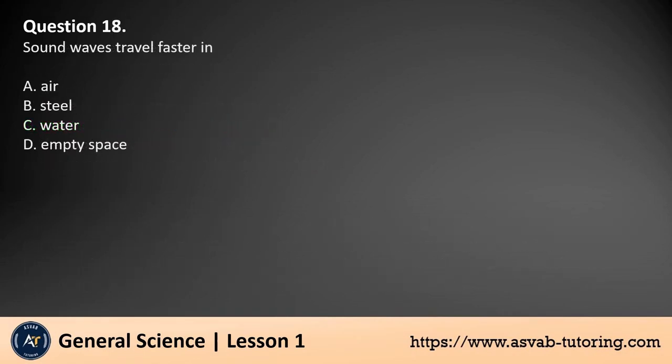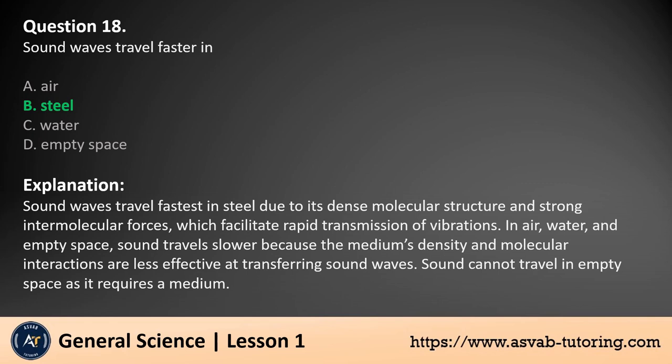Question 18. Sound waves travel faster in: a. Air. b. Steel. c. Water. d. Empty space. The answer is b. Sound waves travel fastest in steel due to its dense molecular structure and strong intermolecular forces, which facilitate rapid transmission of vibrations. In air, water, and empty space, sound travels slower because the medium's density and molecular interactions are less effective at transferring sound waves. Sound cannot travel in empty space as it requires a medium.